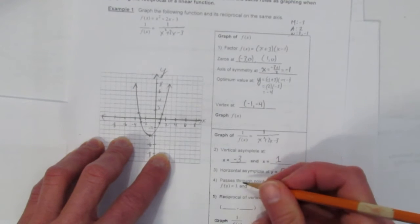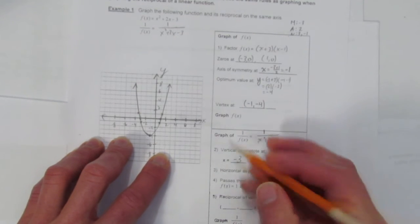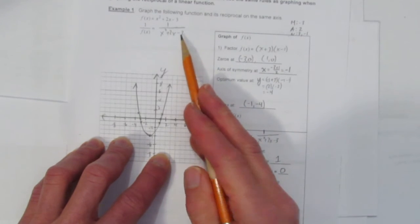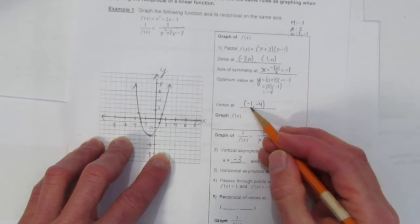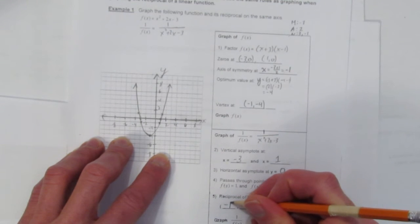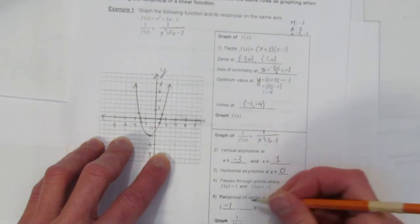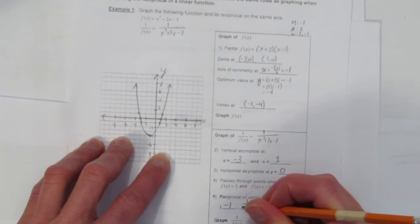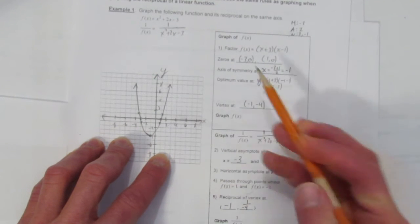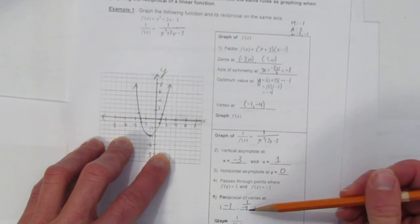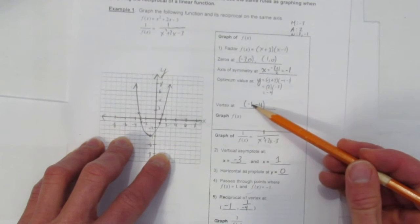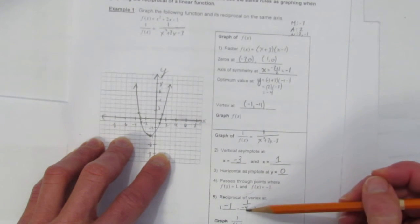We also need the reciprocal vertex. When you're talking about the reciprocal function, its vertex is at the same x value. But take the y value and make it a reciprocal. That's literally what a reciprocal function is. It's the y values are just 1 over. So this vertex in the reciprocal function is (-1, -1/4).